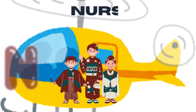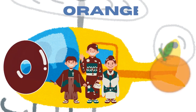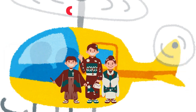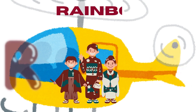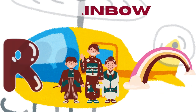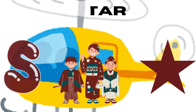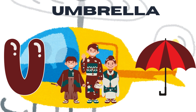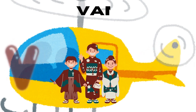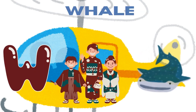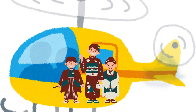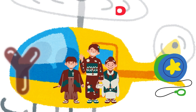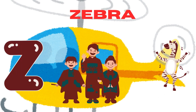N for nurse, O for orange, P for parrot, Q for queen, R for rainbow, S for star, T for toy, U for umbrella, V for van, W for wheel, X for xylophone, Y for yo-yo, Z for zebra.